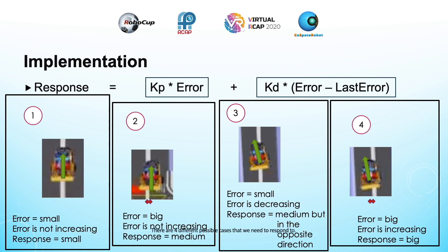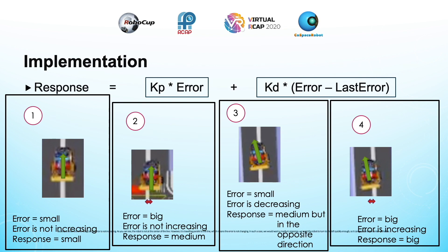There are four different possible cases that we need to respond to. First, when the error is small and the error is not increasing: the robot is in the center of the line and facing parallel to the line, so we want the response to be small — we don't want the robot to turn left or right a lot because it is going to go straight. In the second case, the error is big but the error is not increasing: the robot is not at the center of the line but is traveling parallel to it, so the error is not changing. We want a medium response — we want the robot to turn left quickly enough to go back to the center, but not too much because it might overshoot to the left side of the line.